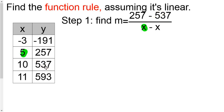Now, because we used the 257 first y, we're going to put the 5 in for the first x. And then because we used 537 for the second y, we're going to use 10 for the second x. Go use calculator or do it by hand. Your slope is 56.